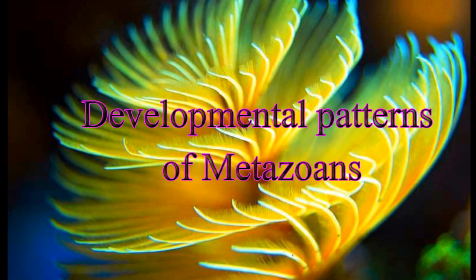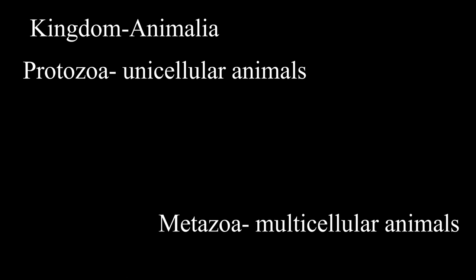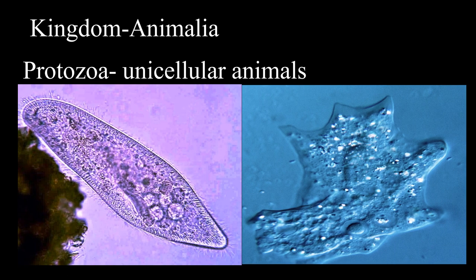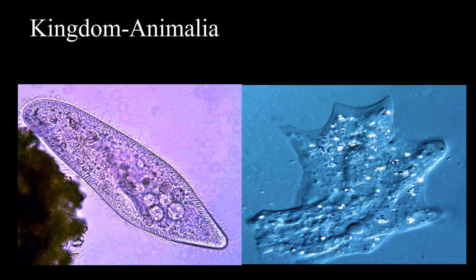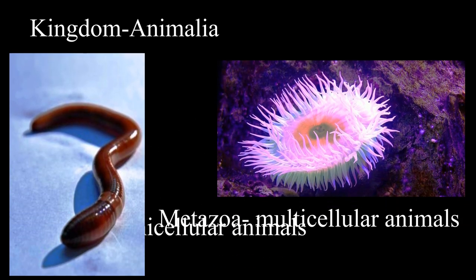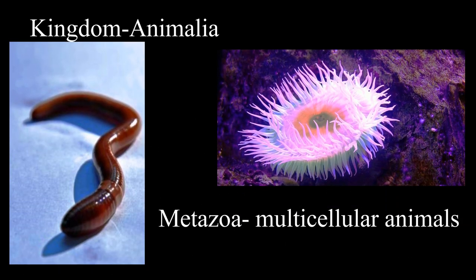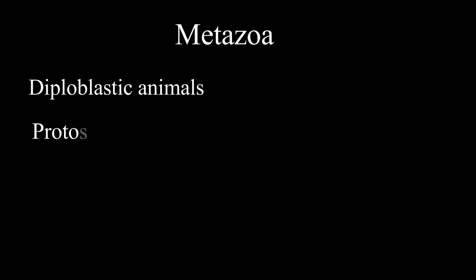Hello friends. Today we are going to see the developmental patterns of metazoans. The kingdom Animalia is divided into two groups: protozoa and metazoa. Protozoans include unicellular animals like Paramecium, Amoeba, etc., while metazoans include multicellular animals like sea anemones, earthworms, etc. Metazoans belong to one of the following branches: diploblast, protostomes, and deuterostomes.